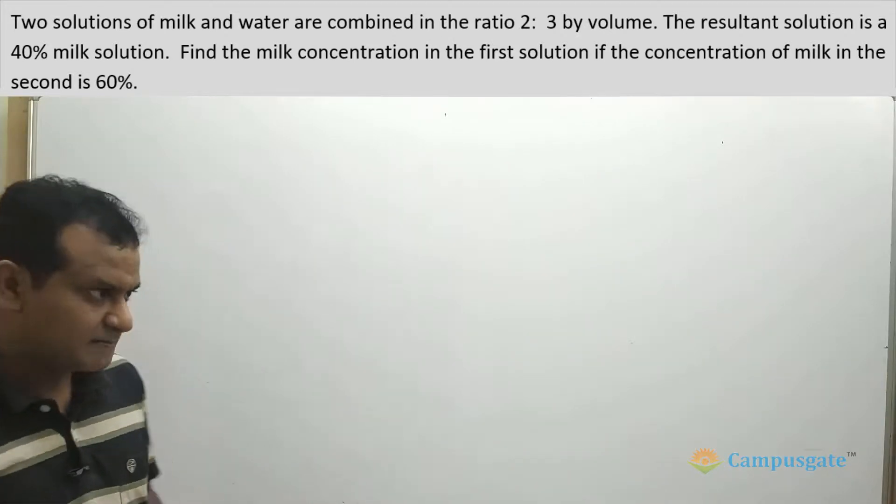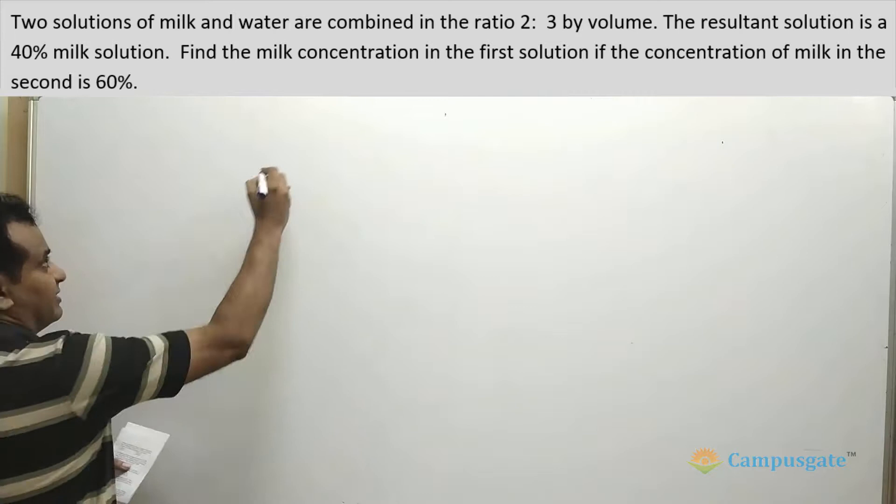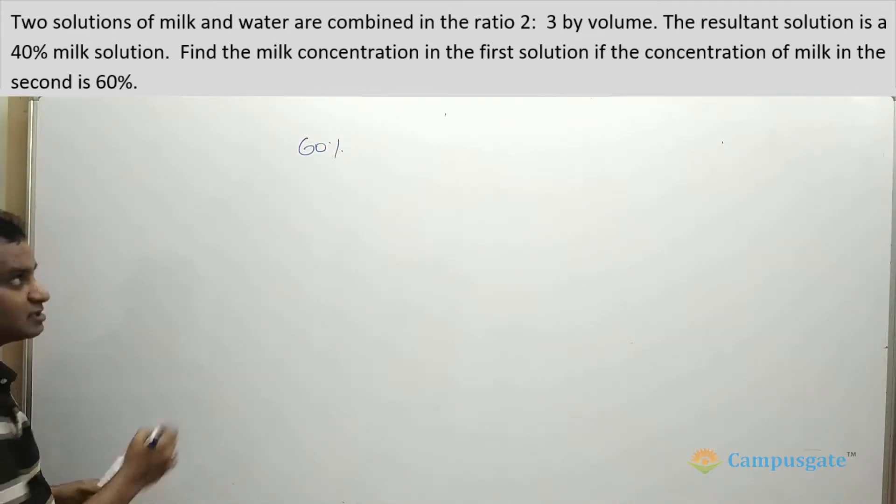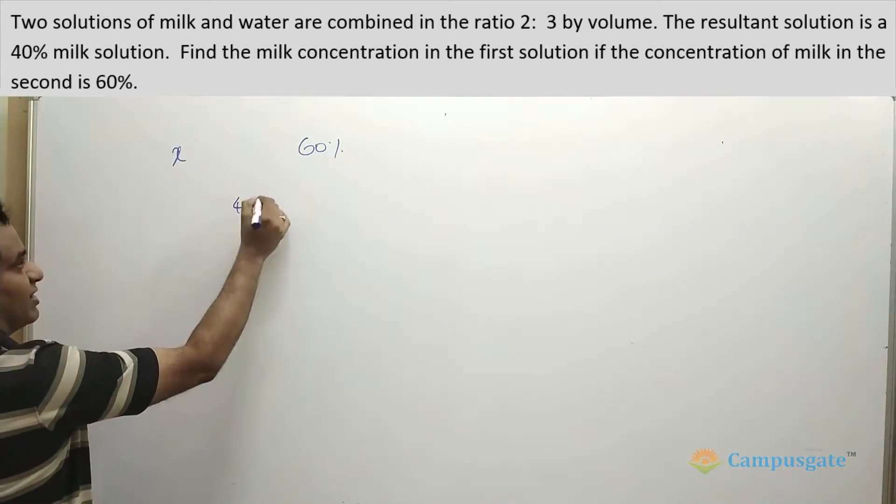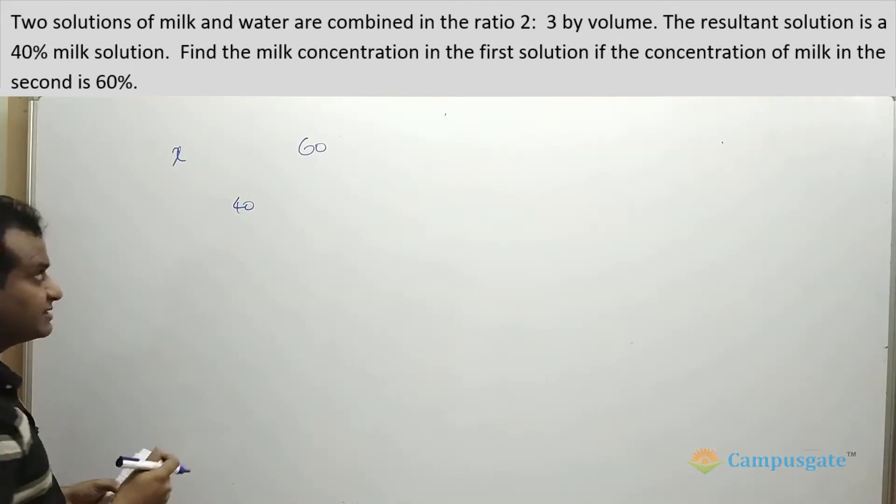So the concentration of the second solution is 60%. Let us write the concentration of the second solution as 60%, then the concentration of the first solution is x, and the resultant solution is 40%. For simplification purposes, just keep the percentage signs aside.